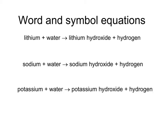Let's have a go at writing the symbol equation for lithium. Lithium would be Li, water would be H₂O, lithium hydroxide would be LiOH, and hydrogen would be H₂. But at the moment this doesn't balance. We've got one lithium on the left, one lithium on the right — that's fine. But we've got two hydrogens on the left and three hydrogens on the right. So we need two H₂O. But now we've got two oxygens on the left and only one on the right, so we need two lithium hydroxides. That gives us two lithiums on the right, so we need to put two lithiums on the left.